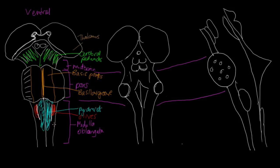Going back to the corticospinal tract that descends in the pyramids, there is a point where the pyramids cross over, and that point is called the pyramidal decussation — decussation being a fancy term for crossing. It is at that point that we get the junction between the medulla and the spinal cord, and that's also the arbitrary point where we have the foramen magnum in the skull.